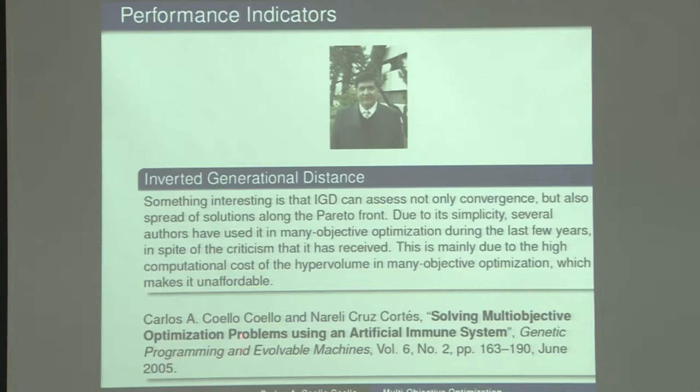This is the paper about an artificial immune system for multi-objective optimization, published in a journal called Genetic Programming and Evolvable Machines — a journal that specializes in genetic programming.